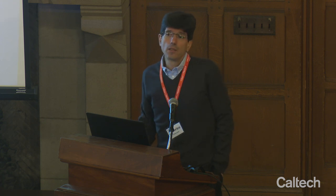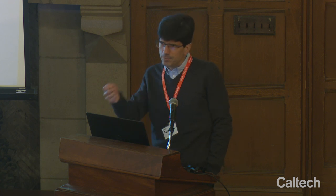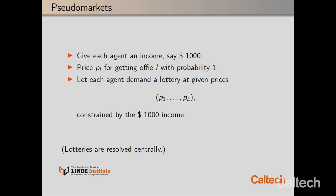We're going to create a pseudo market. We get all the agents in the economy — all staff, students, and faculty — in this room. When they come in, we give everyone a thousand dollars of Monopoly money. Then we create our market and assign lotteries. There will be a price P_L for getting office L with probability one. With my Monopoly money, I'll be buying probability shares in the offices.